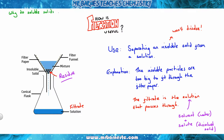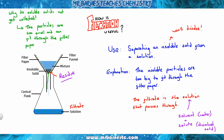So why do soluble solids not get collected? That is all down to particle size. If a solid will dissolve, the particles are going to be too small — small enough that they can fit through the holes in the filter paper, as you can see here. So they end up in the filtrate. Only insoluble solids like sand can be collected through filtration.